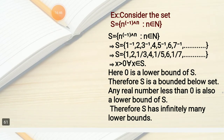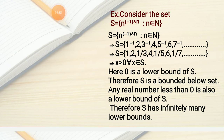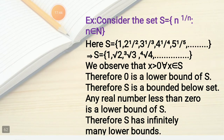Again, for S = {n·(-1)^n : n ∈ N} = {-1, 2, -3, 4, -5, 6, -7, ...}: all elements of S are positive... actually S contains both positive and negative values but all elements satisfy X > 0 — wait, S = {-1, 2, 1/3, 4, 1/5, 6, 1/7, ...}, all positive. So X > 0 for all X ∈ S, therefore 0 is a lower bound of S and S is a bounded below set. Any real number less than 0 is also a lower bound, so S has infinitely many lower bounds.